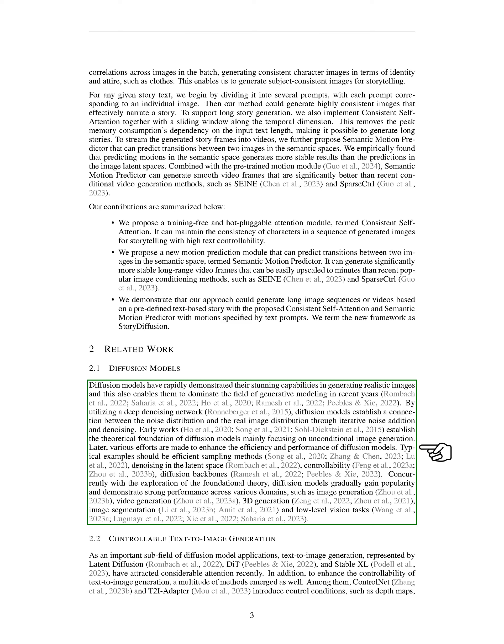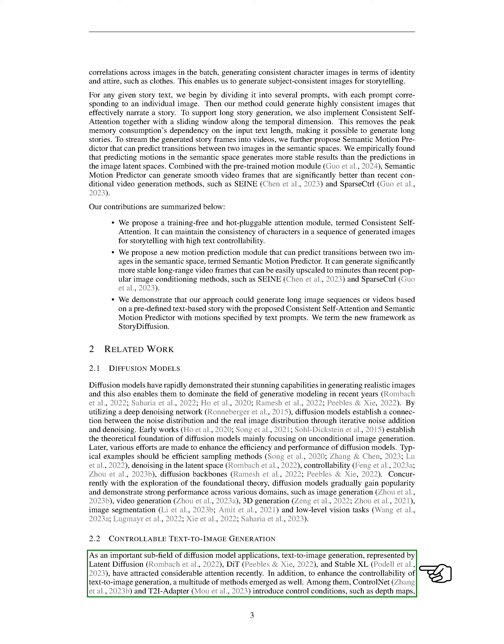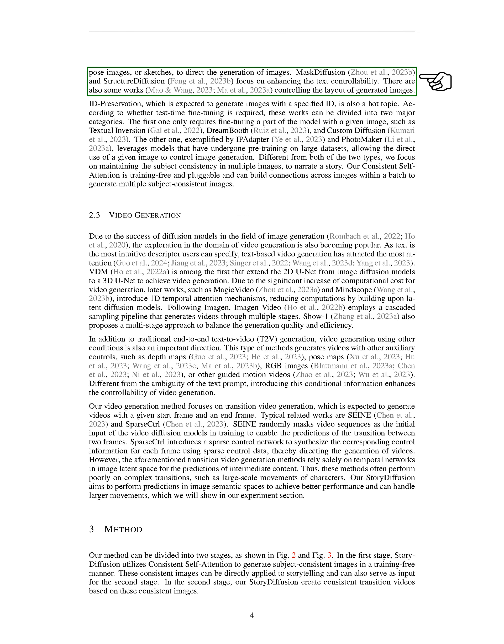In this section, we delve into controllable text-to-image generation, which is a crucial aspect of diffusion model applications. Recently, methods like latent diffusion, DIT, and Stable XL have gained attention in the field of text-to-image generation. To enhance control over this process, various techniques have emerged. ControlNet and T2iAdapter, for instance, introduce conditions like depth maps or sketches to guide image generation.